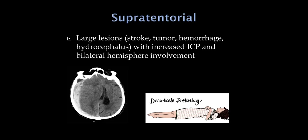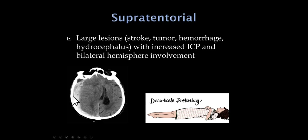For supratentorial coma, you need a mass effect to be in a coma. For example, a subdural hematoma compresses the opposite hemisphere — both hemispheres need to be involved for a supratentorial coma. This patient would likely have focal findings such as left hemiplegia from mass effect on the right side. Causes include stroke with edema and herniation, tumor, hemorrhage, hydrocephalus, and abscess.